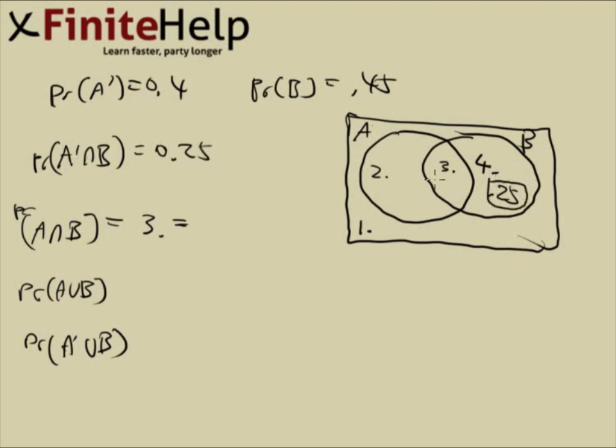We know B is 0.25, we have 0.25, we have 0.2 for the middle. We know A prime is 0.4, and A prime consists of one and four. If four is 0.25, that leaves one to be 0.15.